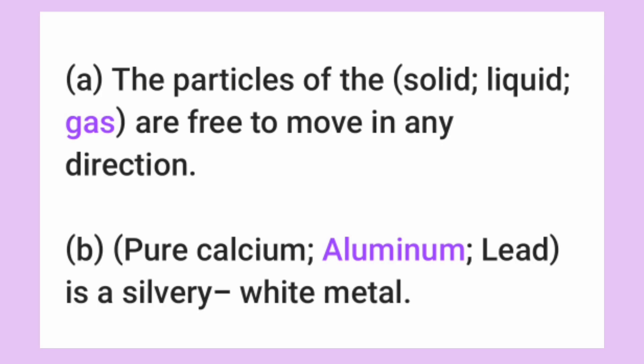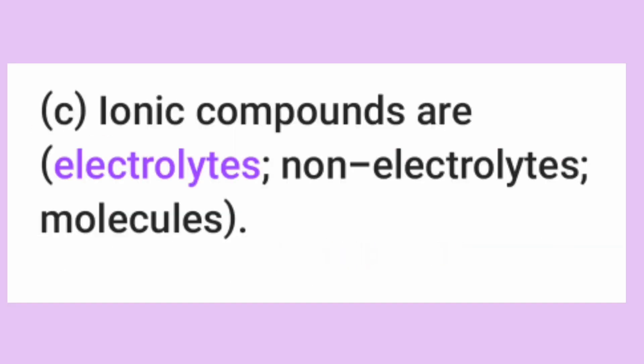Number B: Pure calcium, aluminum, lead is a silvery white metal utu bihare. Samaru opli ma nga, aluminum ui wa me. Aluminium is a silvery white metal. Number C: Ionic compounds are electrolytes, not non-electrolytes, not molecules. Ionic compounds e di liya like zhi de, da chan opli ma nga electrolytes pa.